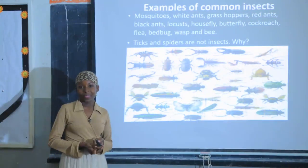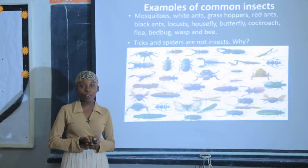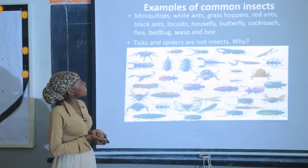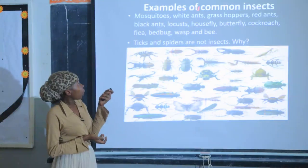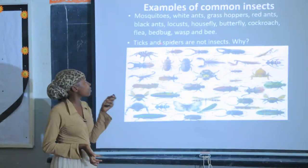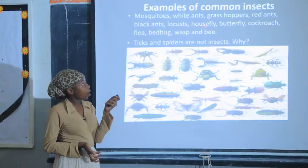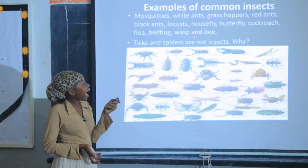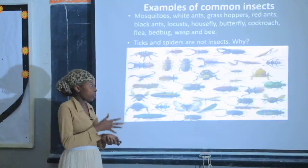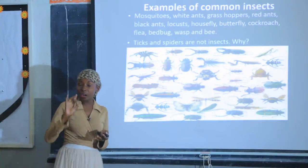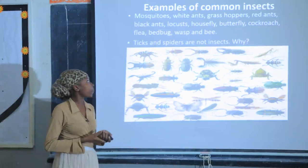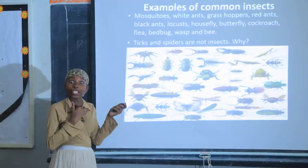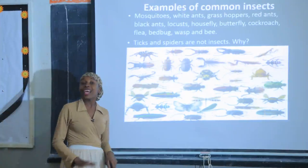This takes us to common insects. We have so many insects in the environment, but let's look at just a few. Examples of common insects are: mosquitoes, white ants, grasshoppers, red ants, black ants, locusts, housefly, butterfly, cockroach, flea, bed bug, wasp, and bee. Note that ticks and spiders are not insects.